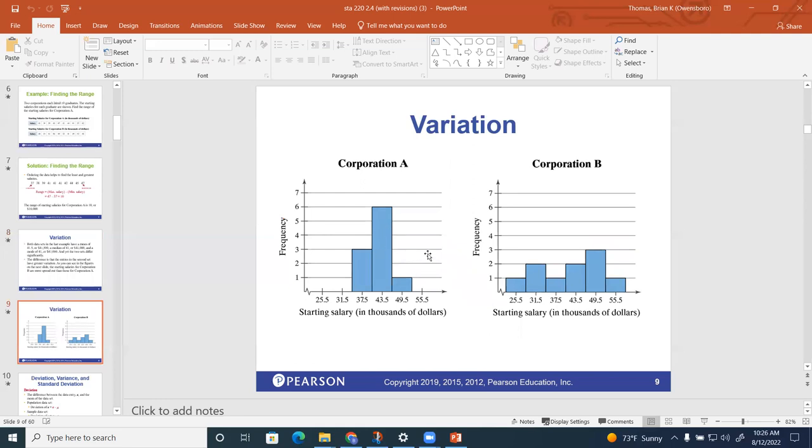So the mean, median, and mode are not really good indicators. If you're wanting to get hired on at corporation A or corporation B, you're thinking, well, the median salary is 41.5—it doesn't matter which company I pick. But notice, though, if you got hired on at corporation B,